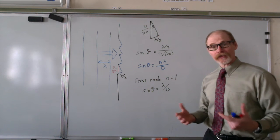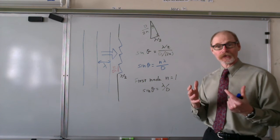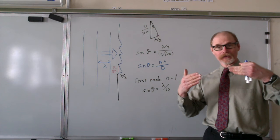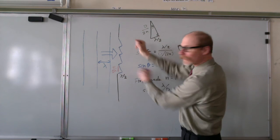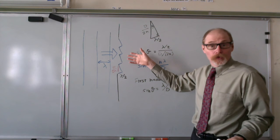What that acts like is like the single wavelet can't, the wavelets can't interfere, and you essentially, when the slit is that narrow, that it's less than one wavelength, or one wavelength or less, that it essentially acts just like a point source of the wave.